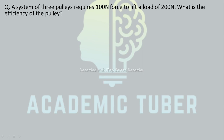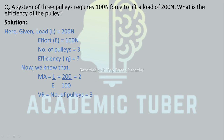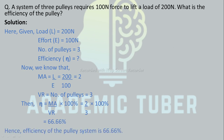Numerical — Pulley: a system of three pulleys requires 100 N force to lift a load of 200 N. What is the efficiency of the pulley? Solution: Load L = 200 N, Effort E = 100 N, Number of pulleys = 3. In a block and tackle system, VR equals the number of pulleys = 3. MA = L / E = 200 / 100 = 2. Efficiency = MA / VR × 100% = 2 / 3 × 100% = 66.66%. Hence, the efficiency of the pulley system is 66.66%.